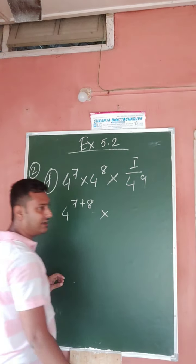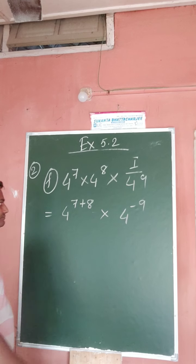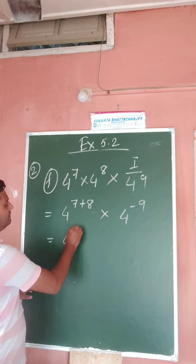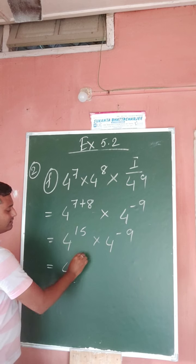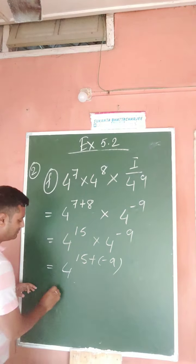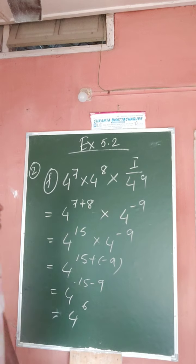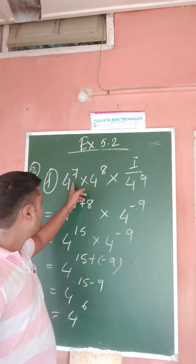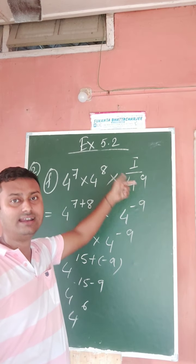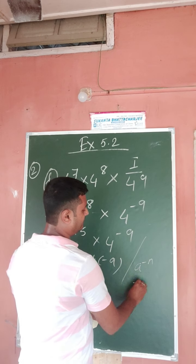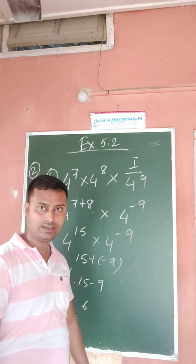1 by 4 to the power 9 you can directly write as 4 to the power minus 9. So this gives 4 to the power 15 into 4 to the power minus 9. Applying the formula a to the power m into a to the power n equals a to the power m plus n, we get 4 to the power 15 minus 9, which is 4 to the power 6. Also note that 1 by a to the power n means a to the power minus n — the negative exponent formula.